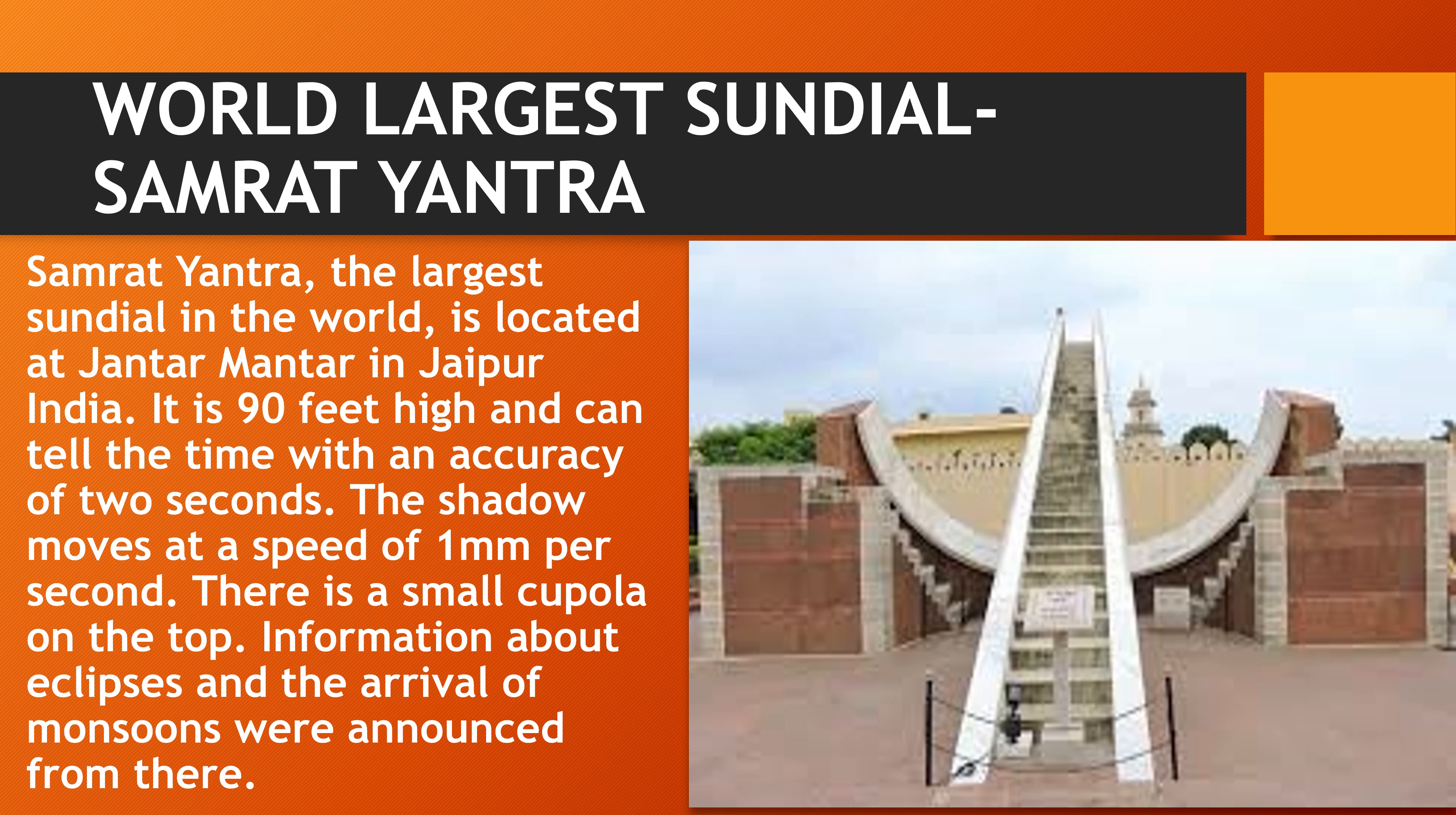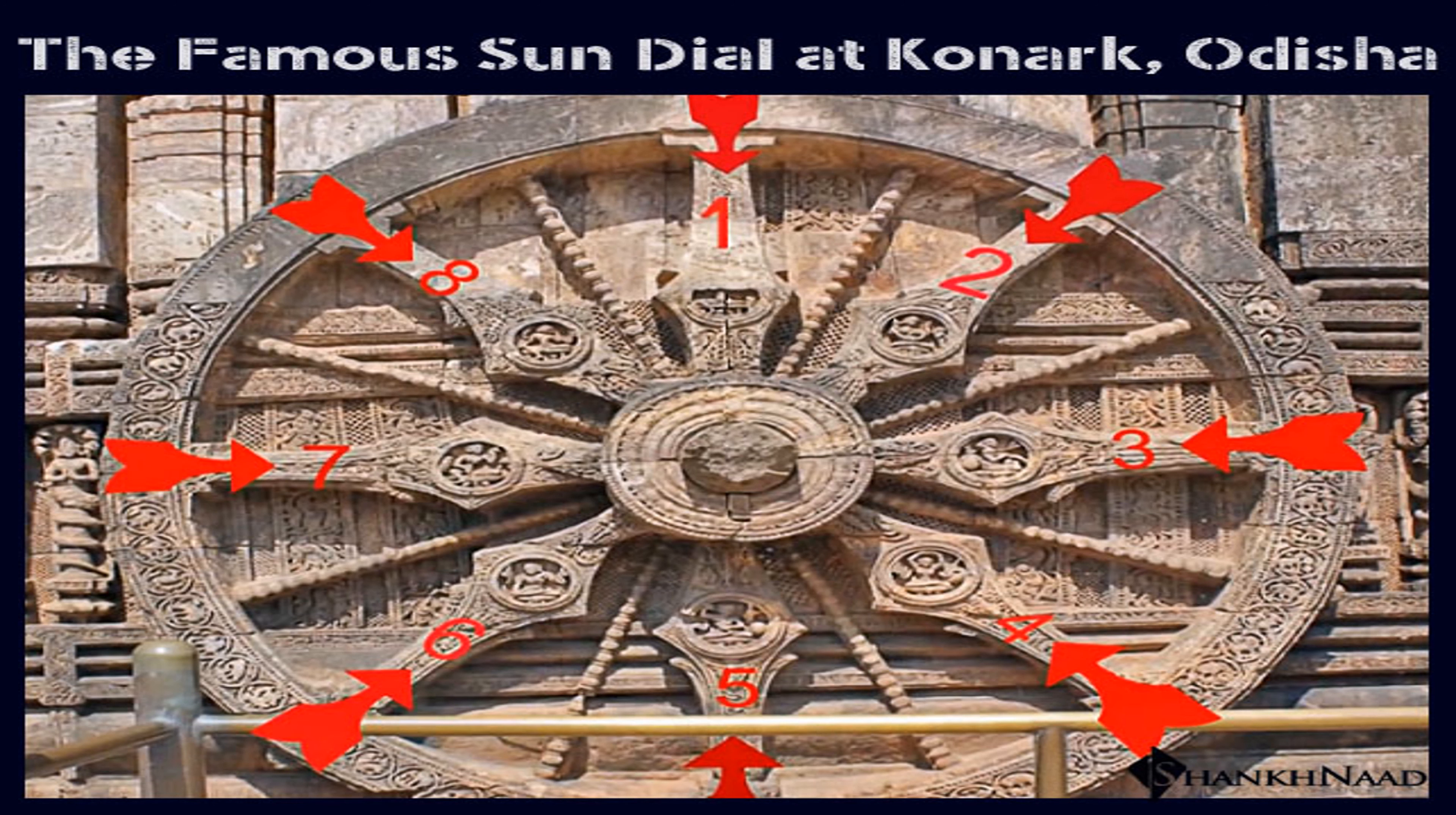The shadow moves at a speed of 1 mm per second. In India, there is a small cupola on the top. The information about eclipses and arrival of monsoons were announced from there. So this was used to announce monsoons and eclipses. The other famous sundial in India is Konark sundial that is in Odisha.